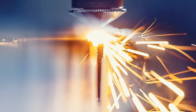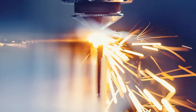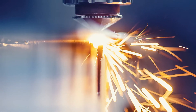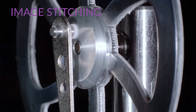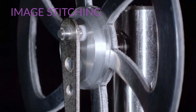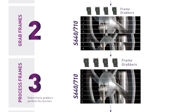Advanced machine vision systems increasingly rely on high-speed imaging, but the data throughput of the fastest cameras creates a couple of challenges. The first is image stitching — although a vital part of the high-speed streaming process, stitching uses significant computing resources.